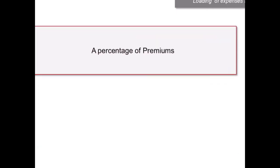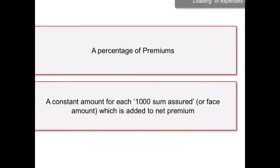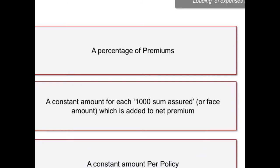The typical expenses loaded to the net premium are as follows. First, a percentage of premiums — commissions and incentives for agency managers or development officers are typically decided as a percentage of premiums earned. Second, a constant amount per each 1,000 sum assured, or face amount, is added to the net premium; expenses like medical examiner's fees and policy stamps vary depending on the amount of sum assured. Third, a constant amount per policy — expenses like salaries and rents generally vary with the amount of activities, which depend on the number of policies being serviced. The more the policies, the higher the overhead expenses.